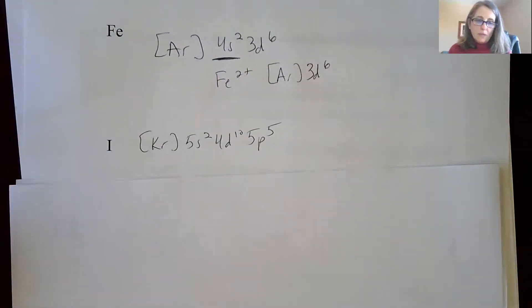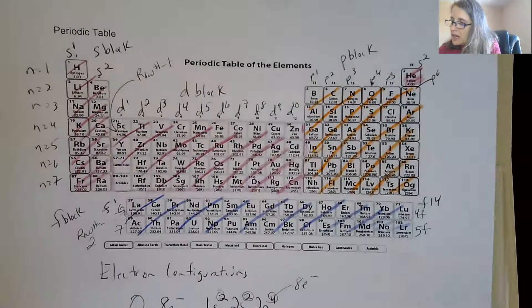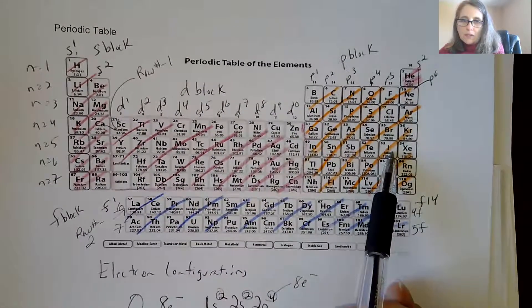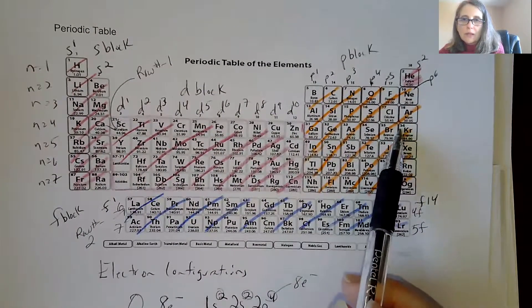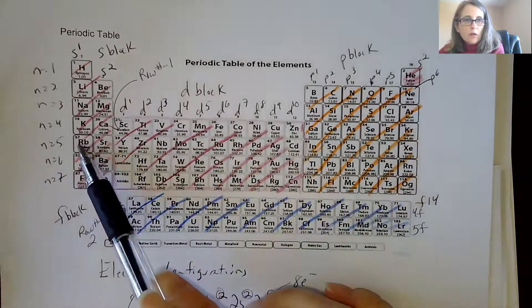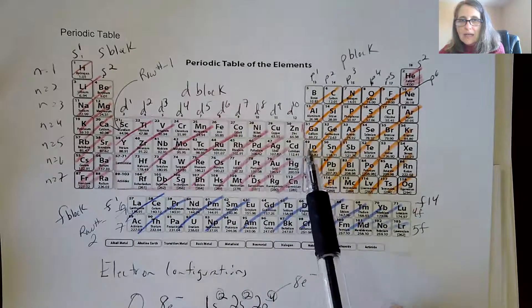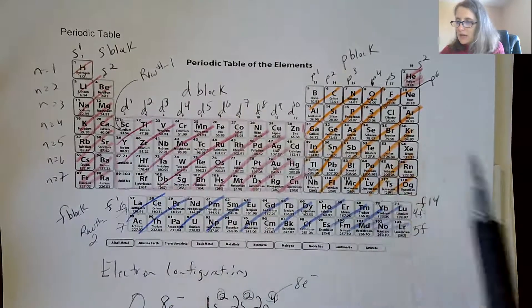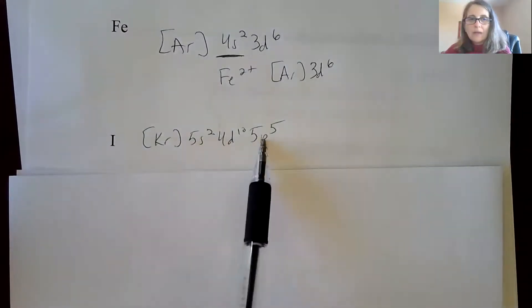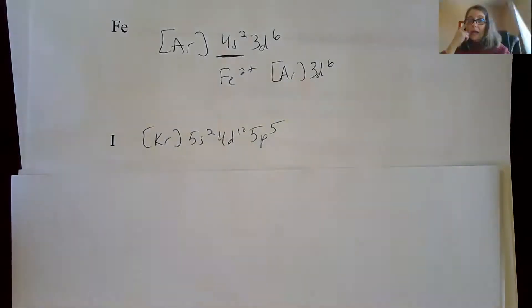Then iodine. This one is where it becomes really helpful. Iodine is way down here, number 53. So you go to the row above it. That is krypton. Then you go across. So it's 5s². Then it goes 4d¹⁰. Then it ends up as 5p⁵. So it keeps you from writing out all of the electron configuration, especially when you get further and further down on the periodic table.